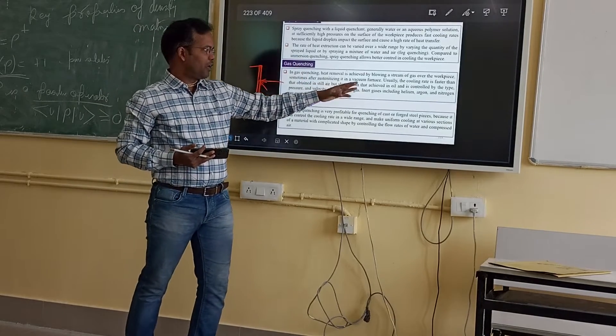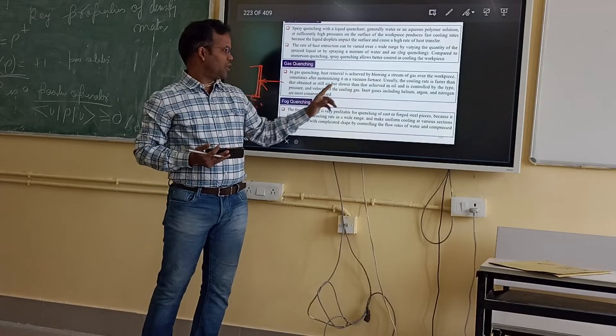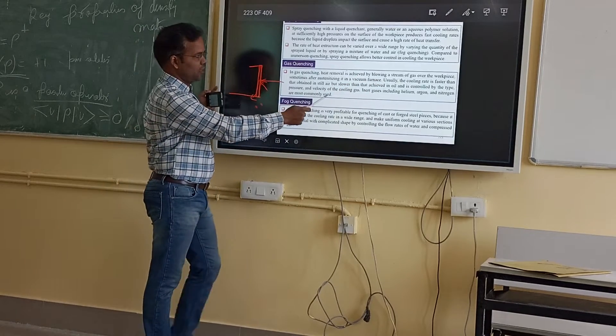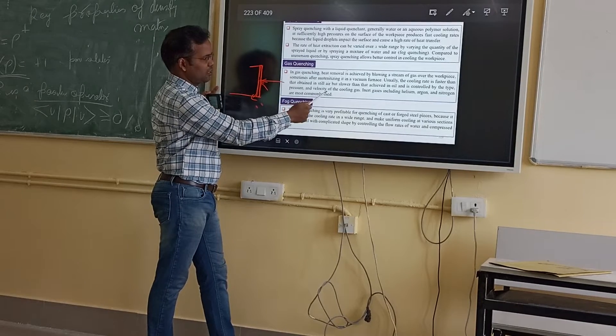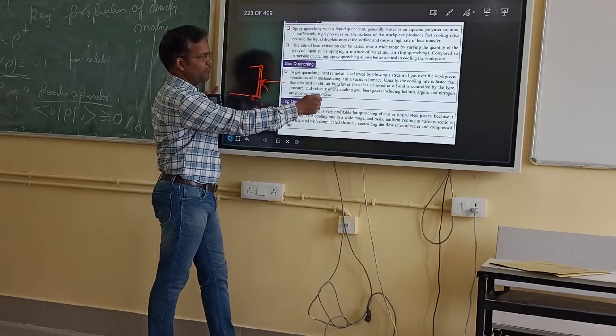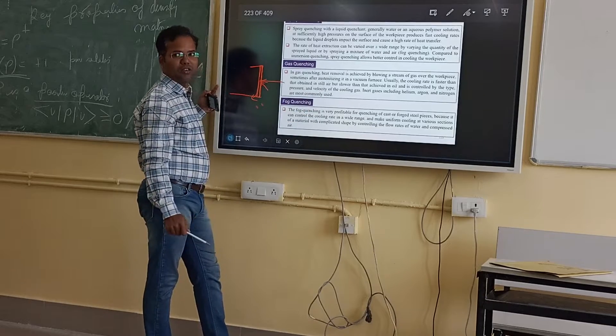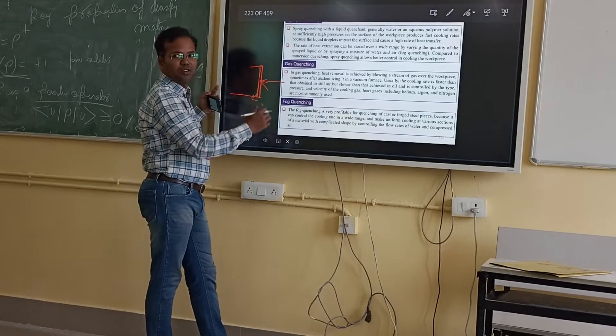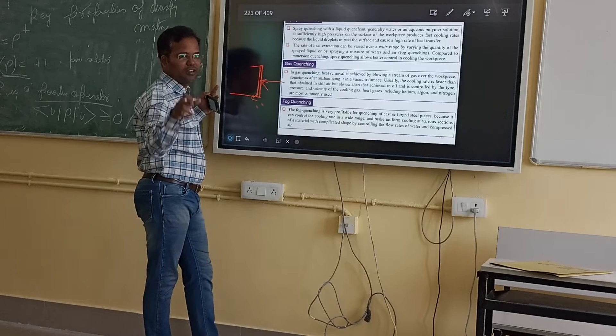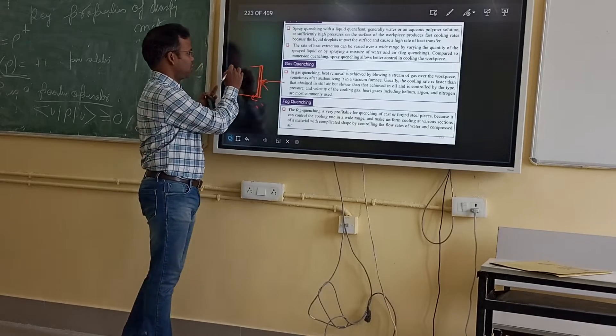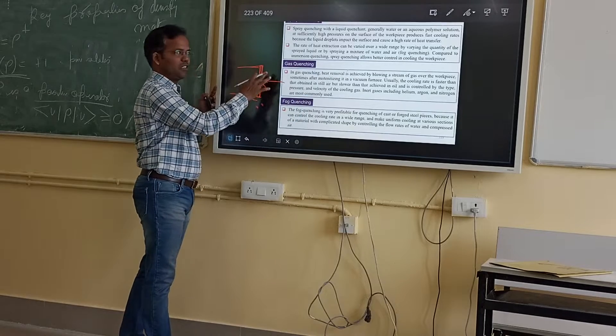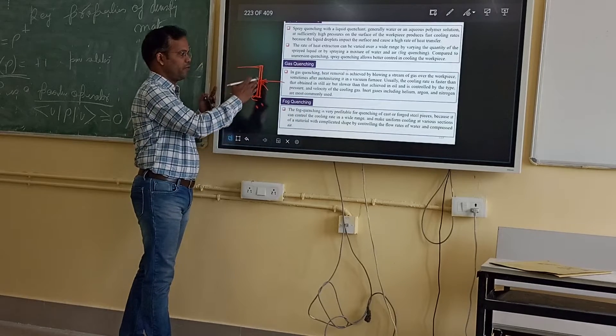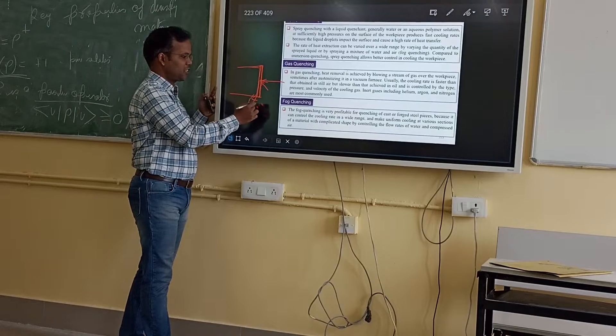The cooling rate is controlled by the type, pressure, and velocity of the cooling gas. If more pressure is there, more gas is actually circulating. With more velocity, you also have faster cooling rate, means heat extraction will be better.